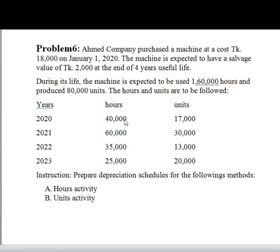The hours and units per year are as follows: 1st year is 12,000 hours, 2nd year is 7,000 hours, 3rd year is 5,000 hours, 4th year is 5,000 hours. For units: 1st year is 7,000, 2nd year is 3,000, 3rd year is 3,000, and 4th year is 2,000.